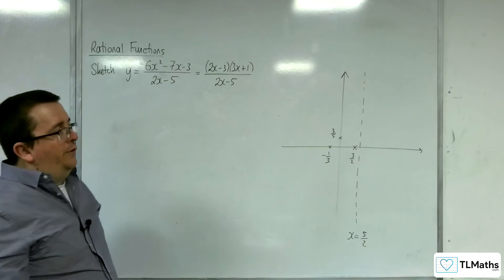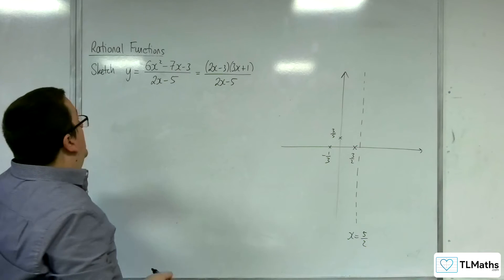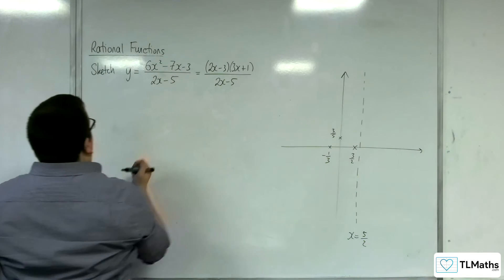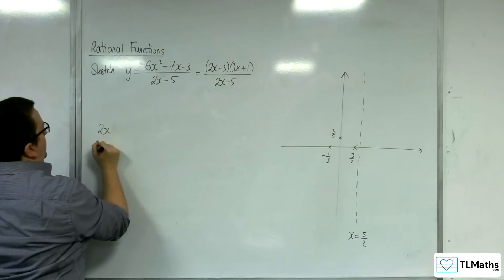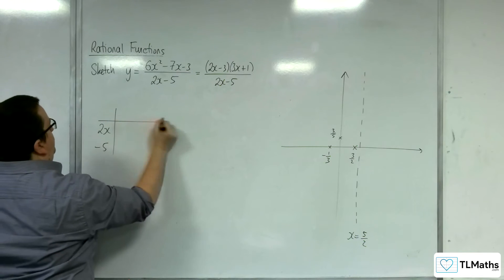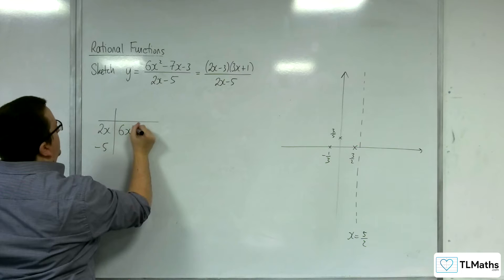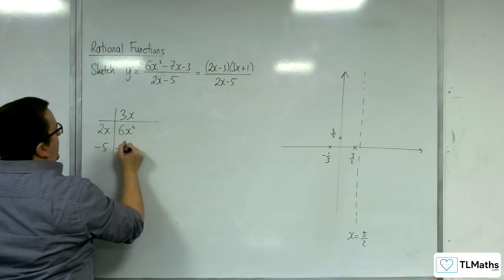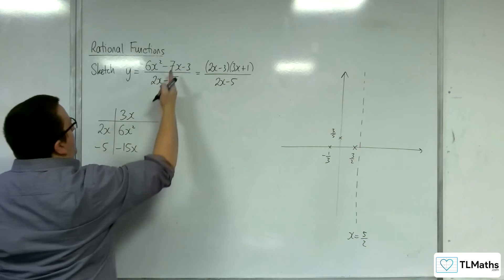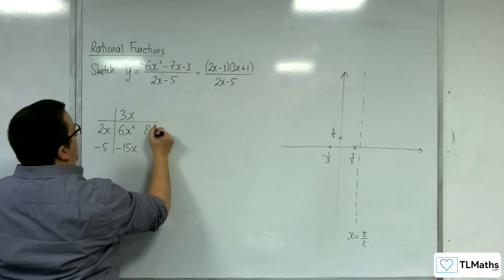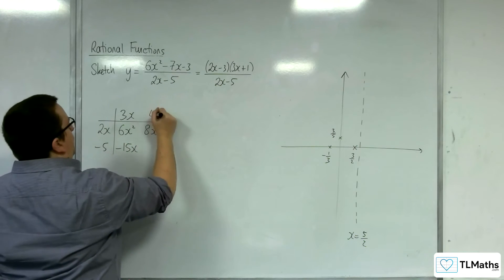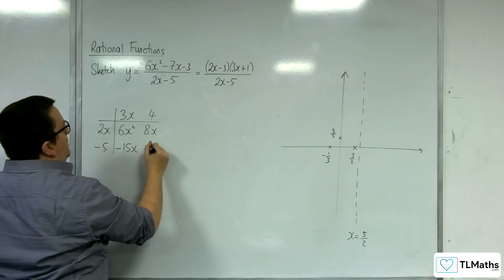And then we want the oblique asymptote. We're going to divide numerator by denominator. So 2x - 5 into 6x², that's going to be 3x. We get -15x. We want -7x, so we add 8x. 2x into that goes 4. 4 lots of -5 is -20.